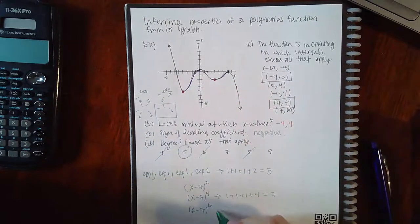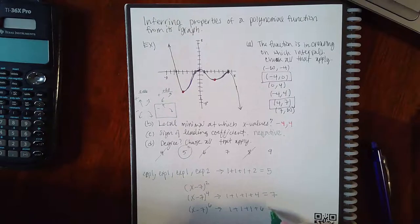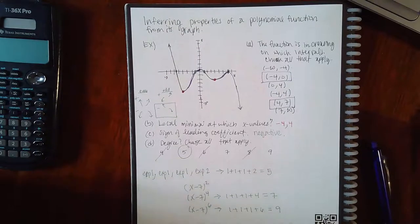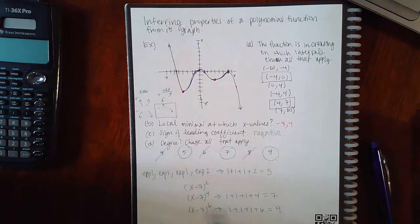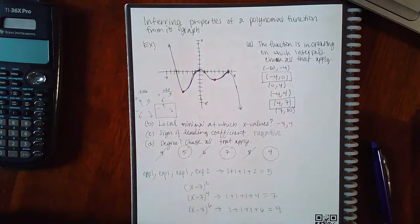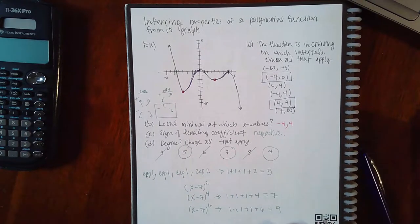What if that had an exponent of six? Then again it would still bounce, but your exponents would be one, one, one, and six, which means nine is also a possibility. So when they say choose all that apply, any of those bouncing polynomials could have higher degrees than just two, and so you end up with three different options for this particular graph.